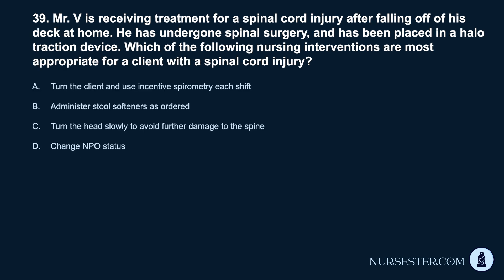Question 39. Mr. V. is receiving treatment for a spinal cord injury after falling off of his deck at home. He has undergone spinal surgery and has been placed in a halo traction device. Which of the following nursing interventions are most appropriate for a client with a spinal cord injury? A. Turn the client and use incentive spirometry each shift. B. Administer stool softeners as ordered. C. Turn the head slowly to avoid further damage to the spine. D. Change NPO status.